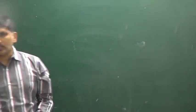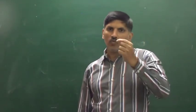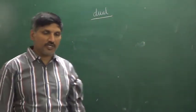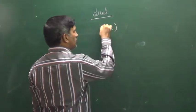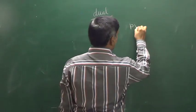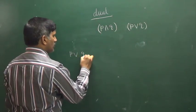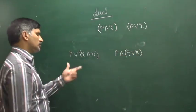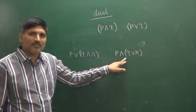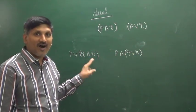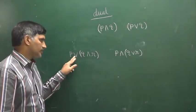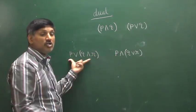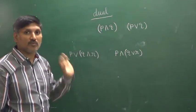Another important idea that appears in JEE exams is the dual of a statement. For example, if the statement is P and Q, the dual is P or Q. For the statement P or Q and R, the dual is P and Q or R. That is about the dual of a statement — you interchange AND and OR to get the dual.